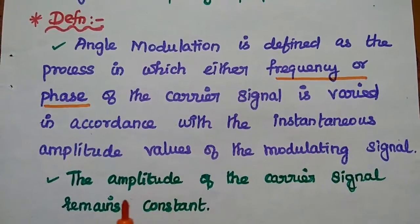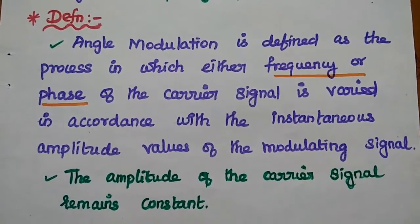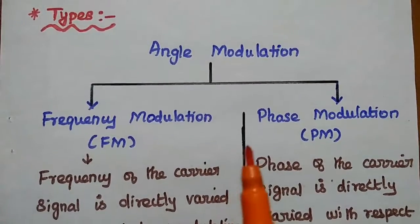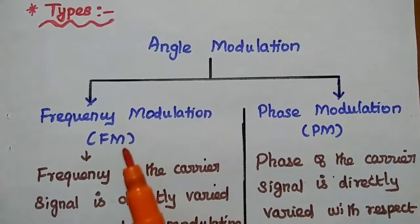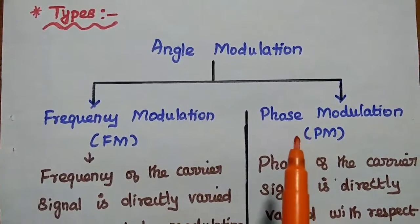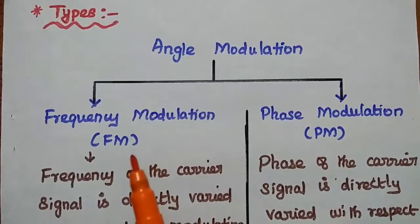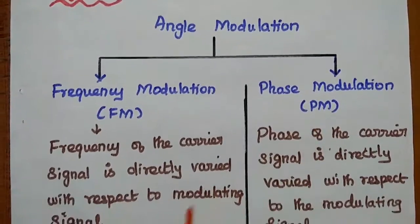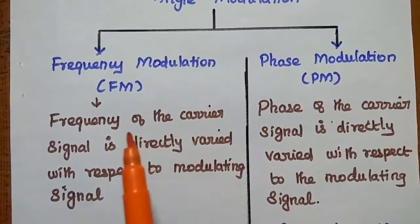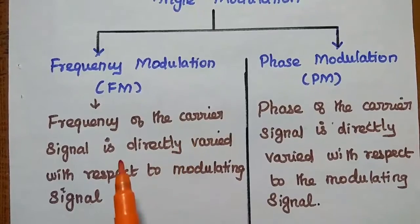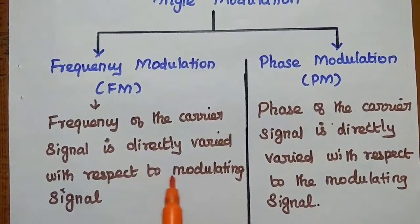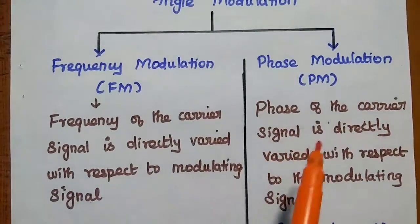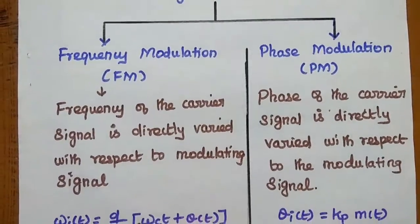In angle modulation, the amplitude of the carrier signal remains constant. Angle modulation can be broadly classified into two types. One is frequency modulation, simply represented as FM. The next one is phase modulation, represented as PM. In frequency modulation, the frequency of the carrier signal is directly varied with respect to the modulating signal. In phase modulation, the phase of the carrier signal is varied with respect to the modulating signal.